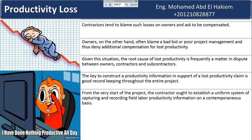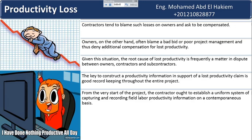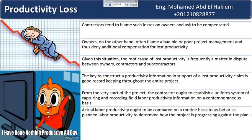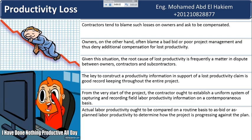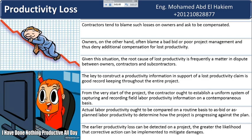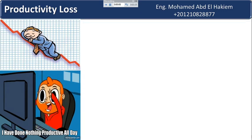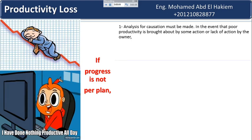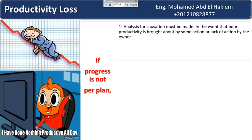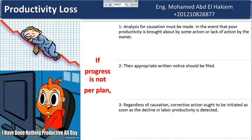From the very start of the project, the contractor ought to establish a uniform system of capturing and recording field labor productivity information on a contemporaneous basis. Actual labor productivity ought to be compared routinely to as-bid or as-planned labor productivity to determine how the project is progressing against the plan. The earlier productivity loss is detected, the greater the likelihood that corrective action can be implemented to mitigate damages. If progress is not per plan, an analysis for causation must be made, appropriate written notice should be filed, and corrective action initiated as soon as the decline is detected.